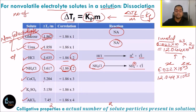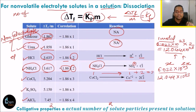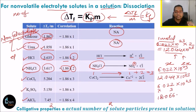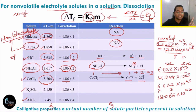For CoCl2, the dissociation is: CoCl2 → Co²⁺ + 2Cl⁻. So one molecule of CoCl2 gives 3 particles total. That means 3 times Avogadro's number = 18.066 × 10²³ particles. So if the number of solute particles becomes 3 times, the colligative property becomes 3 times. That's why the experimental value is 5.204, which is almost 3 times of 1.86.